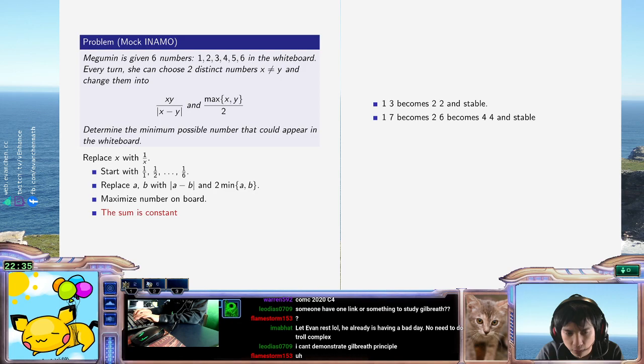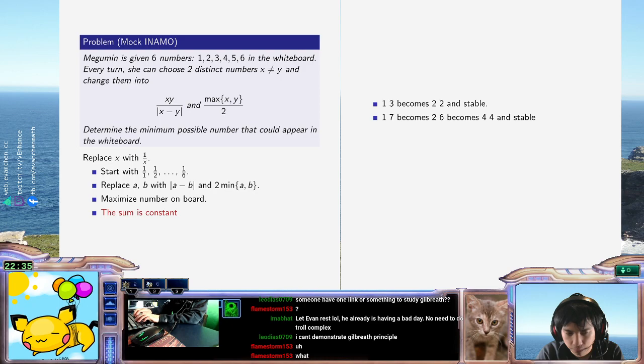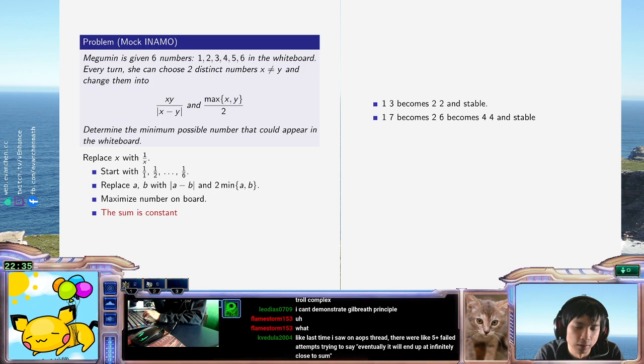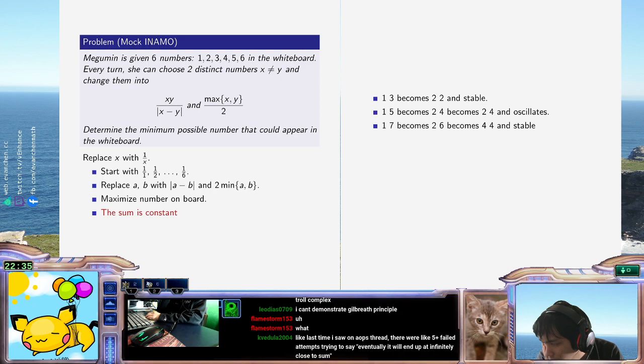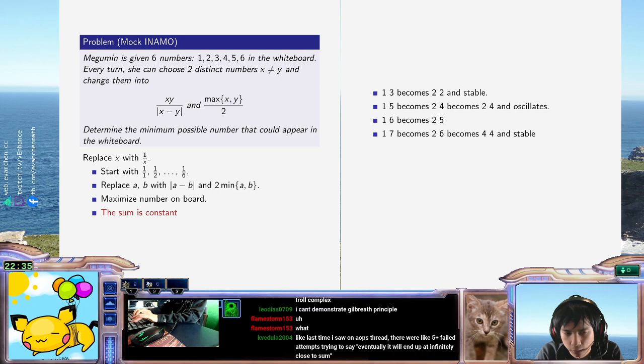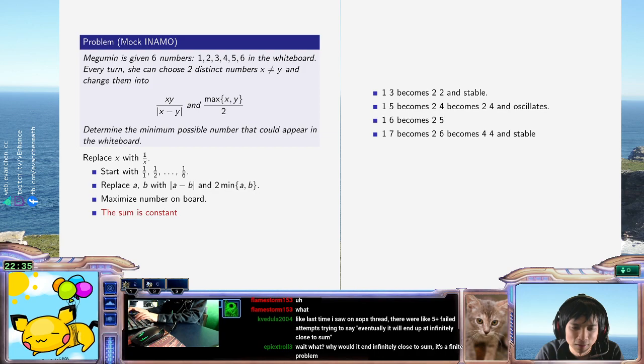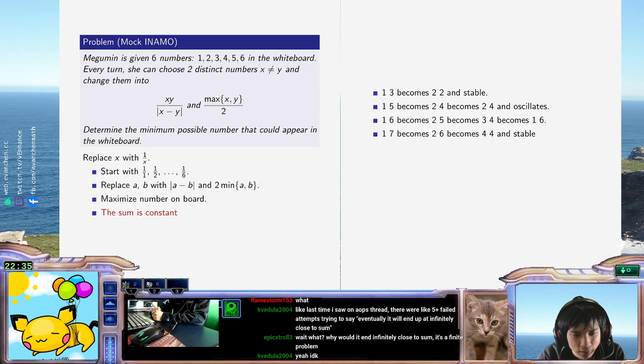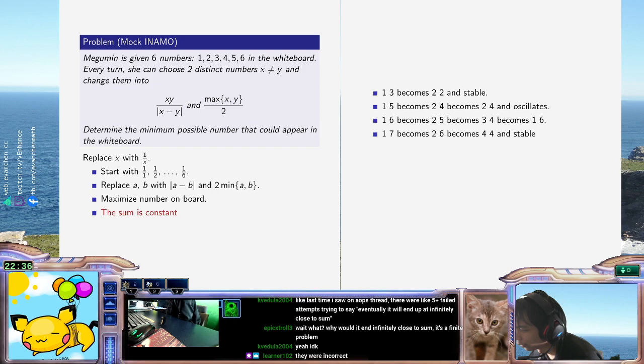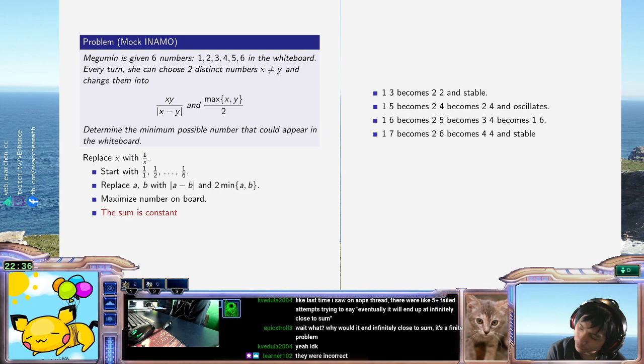It becomes 2-4, becomes... And it escalates. I'm afraid to try 1-6. Let's try 1-6. 1-6 becomes 2-5, becomes 3-4 becomes 6-1. I want to get closer to some average, but these cases show that's just not what happens.